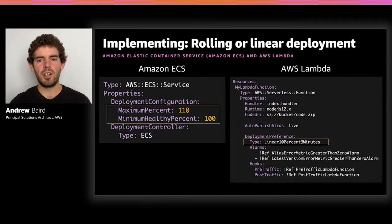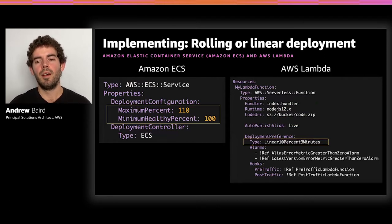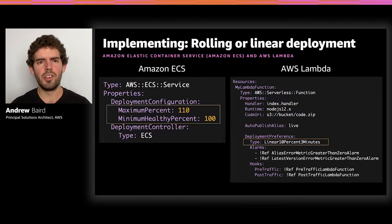For the ECS service with container-based applications, you have a 'Deployment Configuration' property similar to the CodeDeploy option within EC2. This is about the maximum and minimum percentage of healthy containers running as part of your service. You can inform CodeDeploy that you want your desired number of tasks always running at 100% to satisfy traffic demand, but you're willing to go up to 110%, so ECS will introduce another 10% of the new container image version into the service in a rolling way.